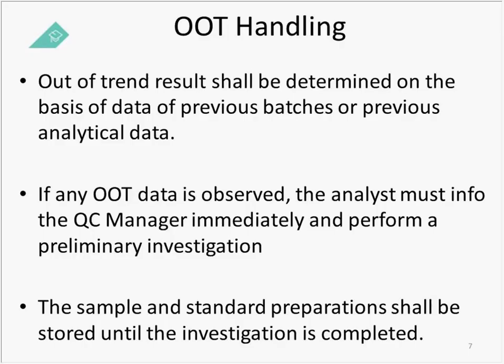Let's talk about the proper steps on how to handle a result when you find it. First and foremost, an out-of-trend result shall be determined on the basis of data from previous batches or previous analytical data. This is a result that, over time and through historical data, is shown not to be in line with what you have historically seen through performance. If an out-of-trend data point is observed, the very first thing the analyst must do is escalate that information to the QC lab supervisor or manager immediately. It is very important that you perform a preliminary investigation quickly, as soon as possible.